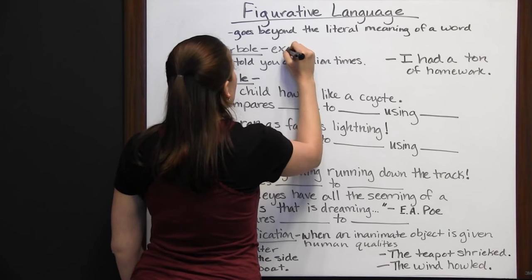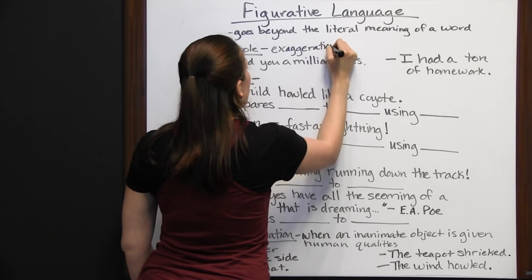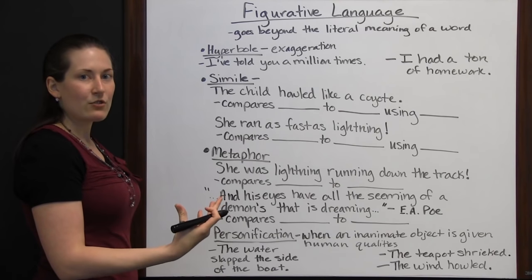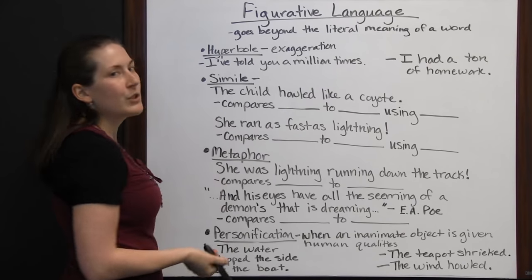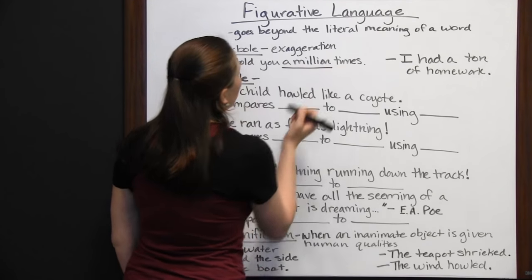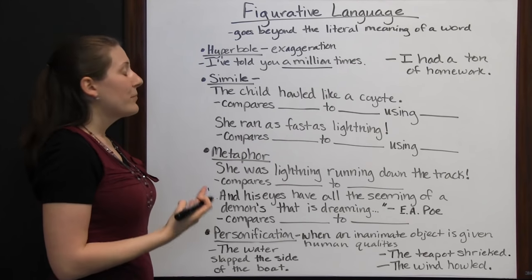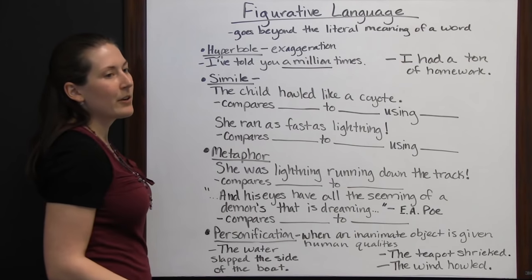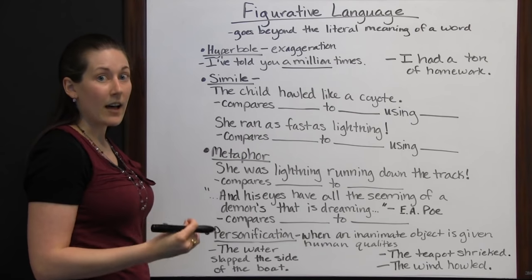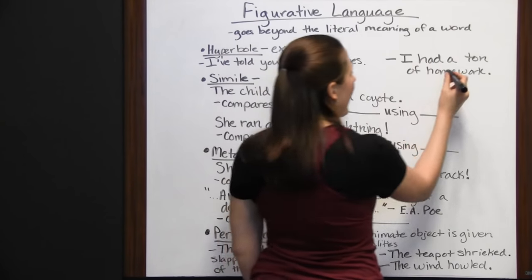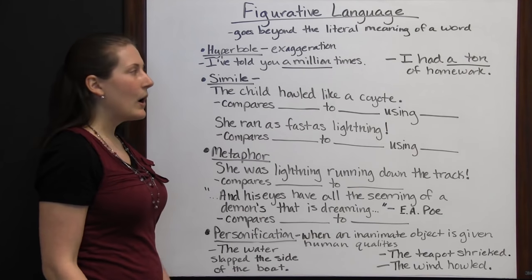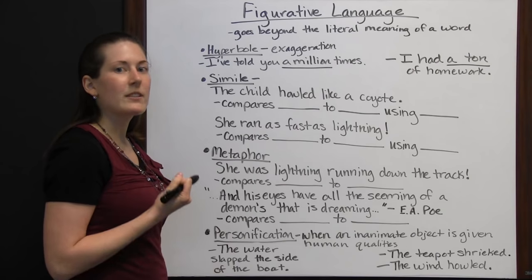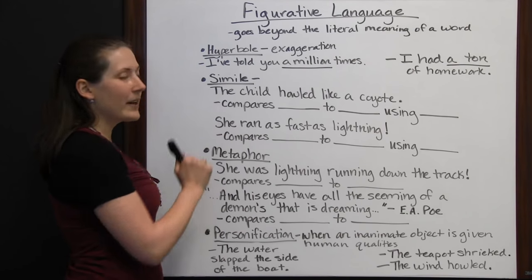Hyperbole is exaggeration. You aren't meant to take it literally — you're meant to know it's an exaggeration, but it's there to emphasize how strongly the author is trying to convey something. For instance, 'I've told you a million times' — you probably haven't been told something a million times, but it's an exaggeration meant to emphasize they've told you this many times before. Another example: 'I had a ton of homework.' You didn't literally have 2,000 pounds of homework, but you're conveying you had way more than a normal amount.